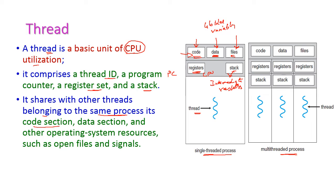Each thread shares with other threads belonging to the same process: the code, data, and other operating system resources such as files and signals. In a multi-threaded process, the code, data, and files are shared by all threads, but each thread has its own set of registers and its own stack.